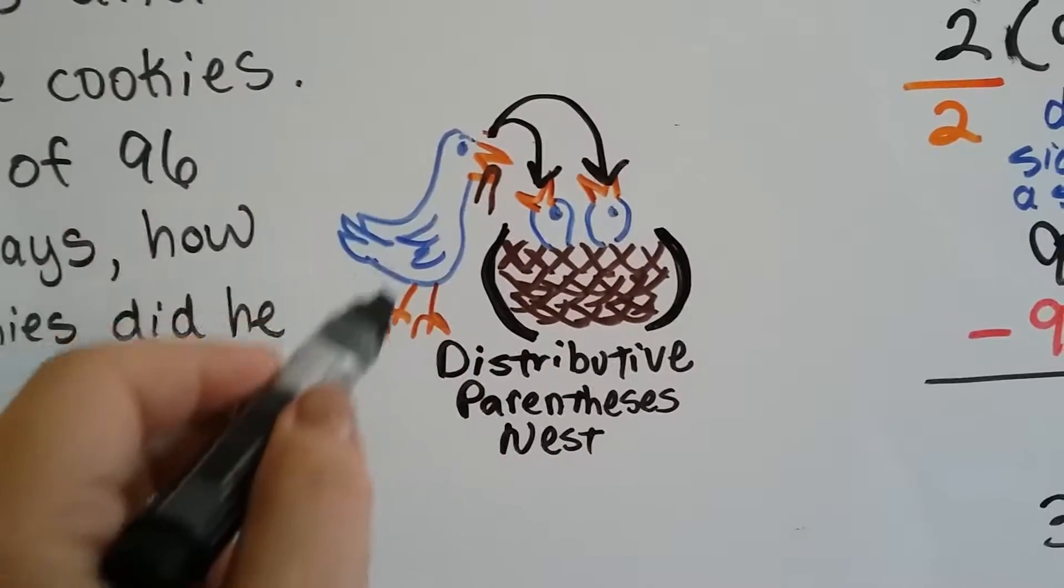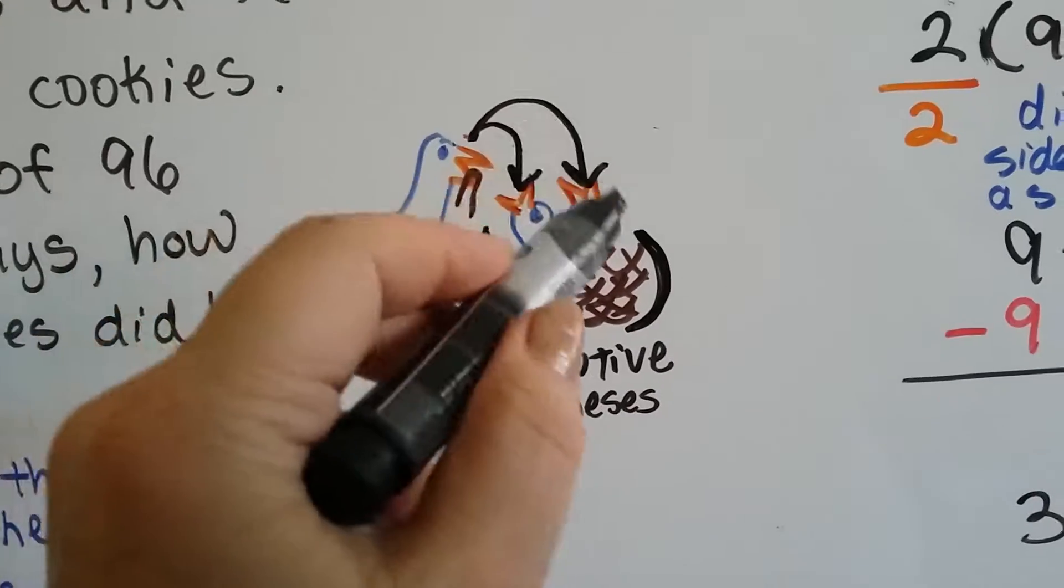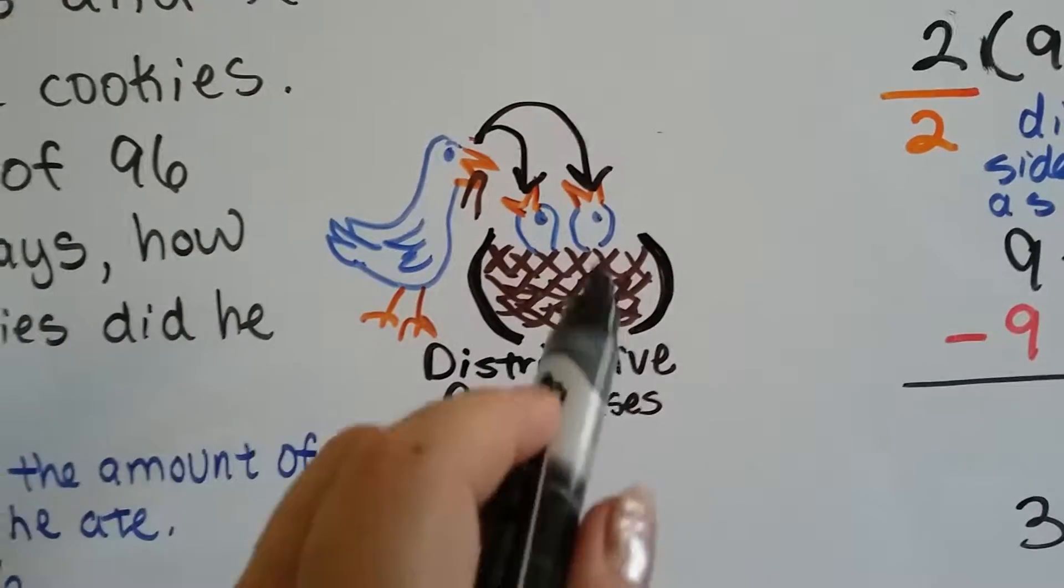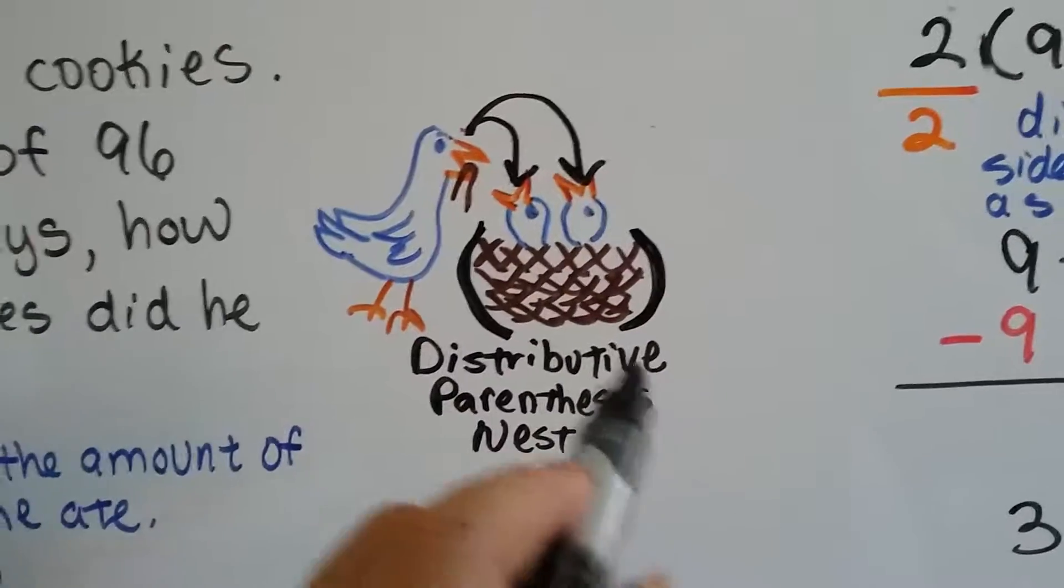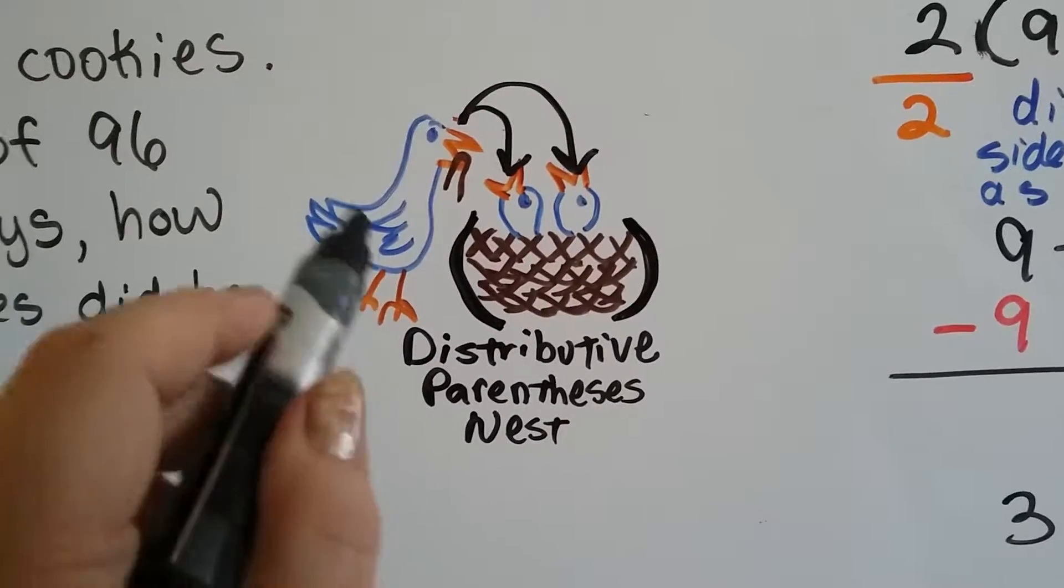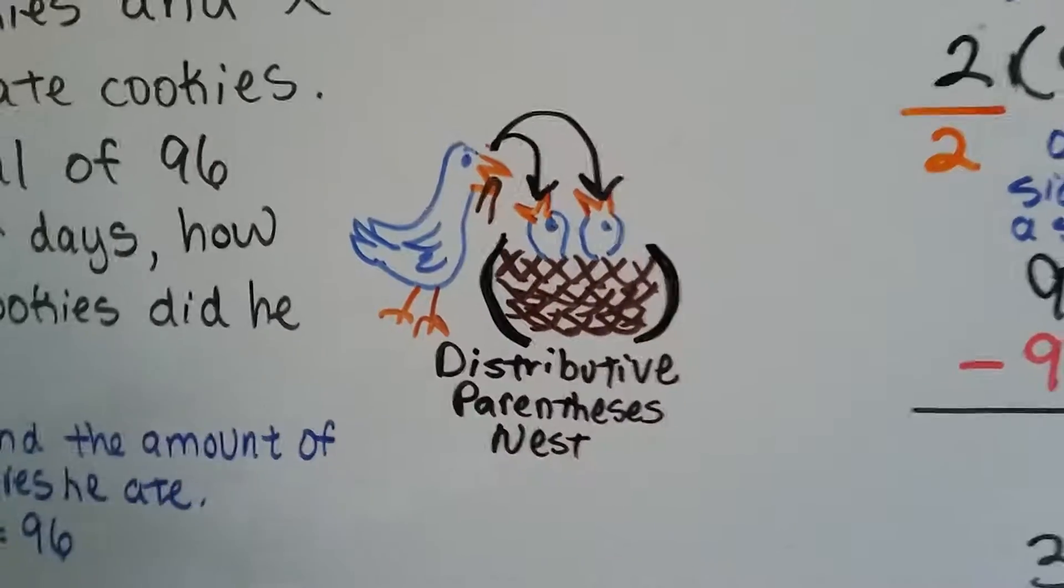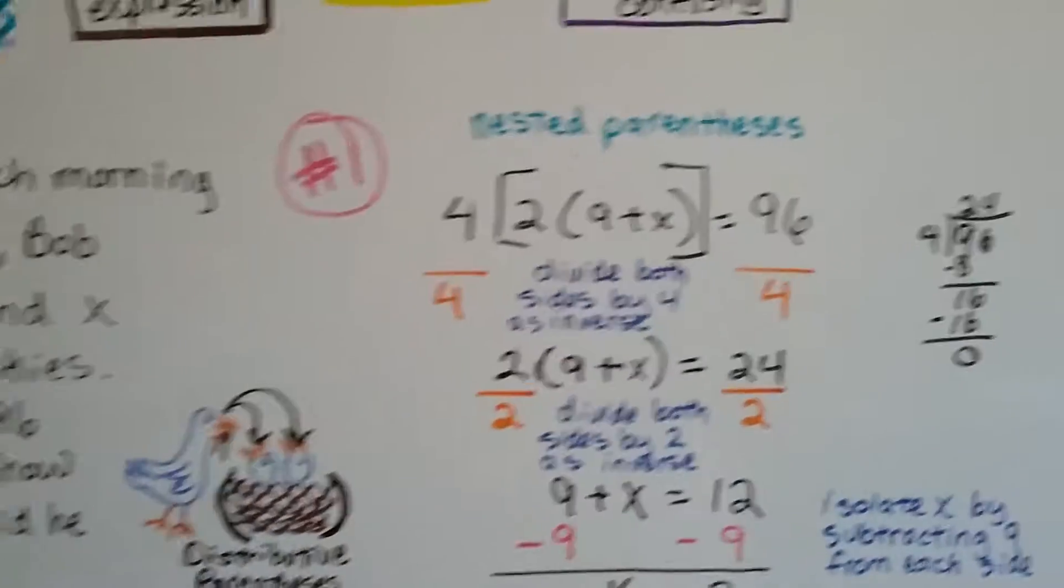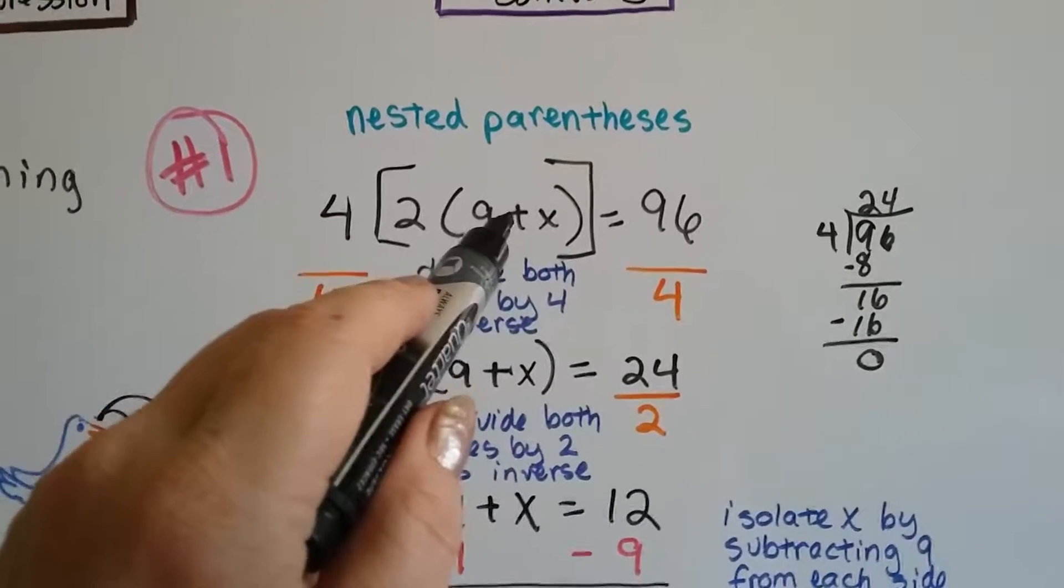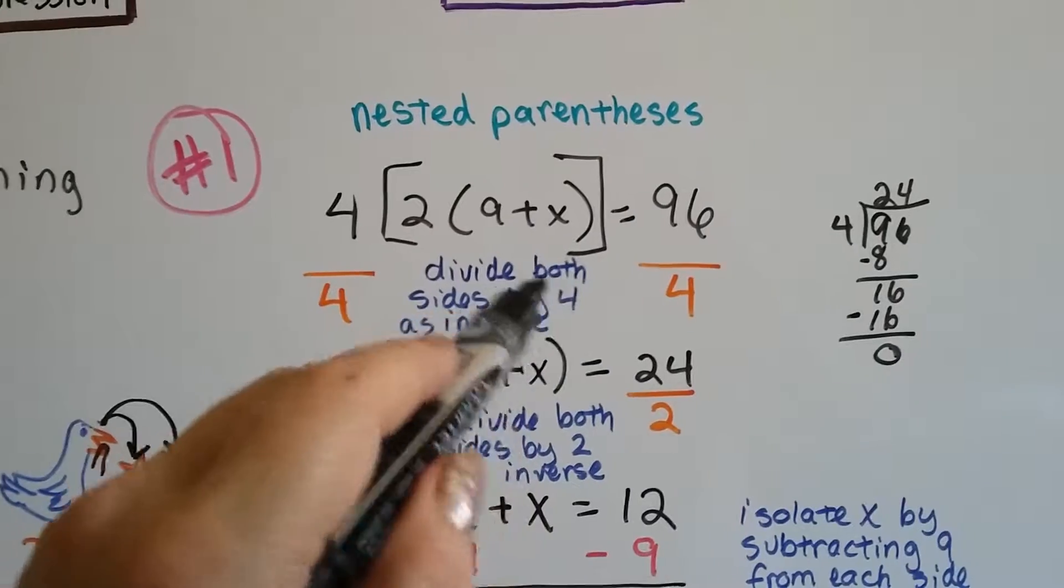Sometimes there's 3, 4, or 5 things inside of a parentheses if it's a really long equation. But you have to remember that the mother bird takes turn feeding each one. These are nested because this parentheses is nested inside of these brackets.